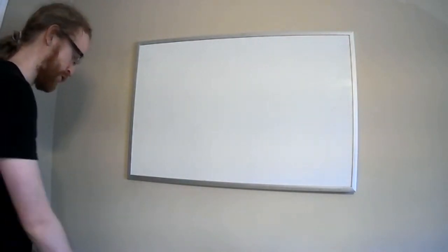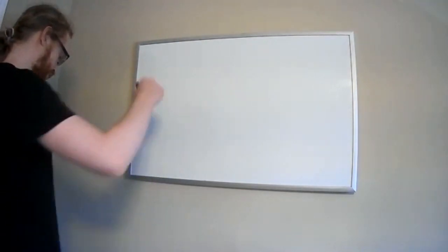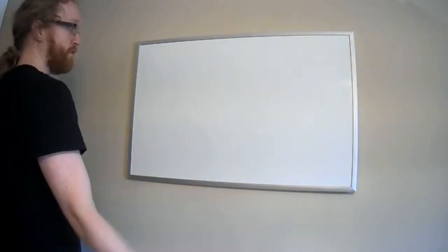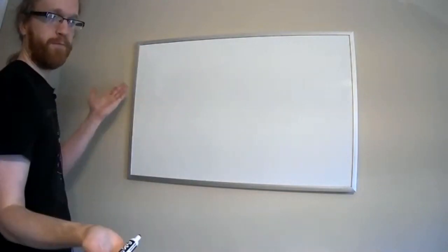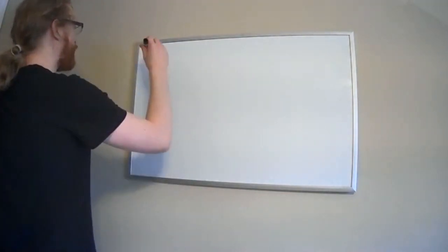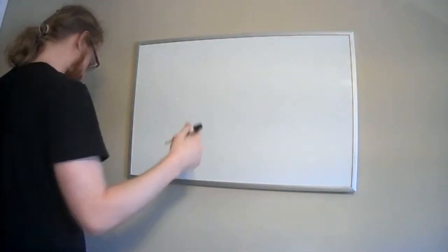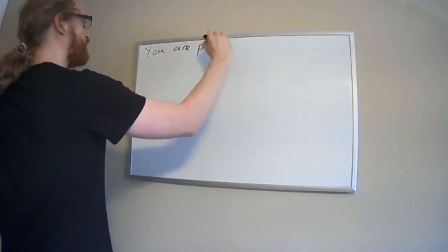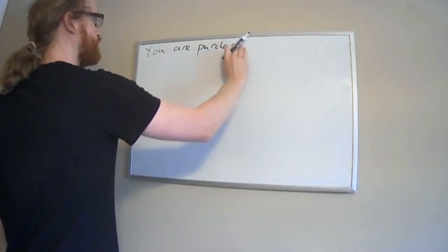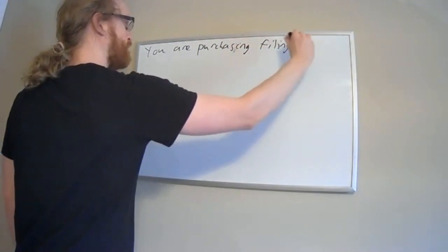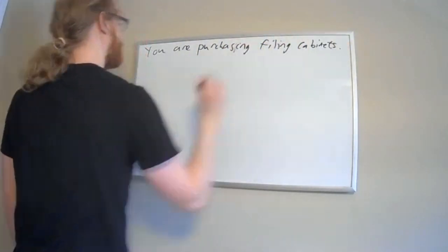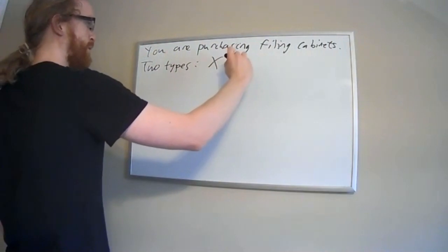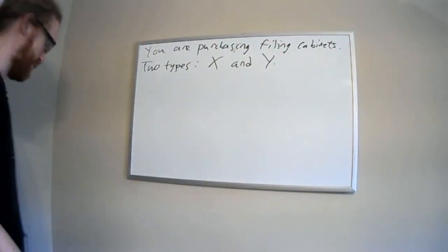Our first problem is as follows. These problems will be stated in the style of section 7.1 as a word problem, and we're going to apply what we learned in 7.2 and 7.3 to solve them. Let's say that you are looking to purchase some filing cabinets. Suppose you have two types to choose from, and for simplicity I'm just going to call them x and y.